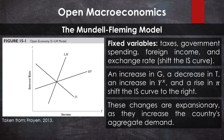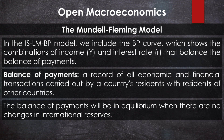In summary, the LM curve gives us the combinations of R and Y that ensure equilibrium in the money market, while the IS curve provides the combinations of R and Y that ensure equilibrium in the goods market. The BP curve gives us the combinations of R and Y that equalize supply and demand in the foreign exchange market at a given exchange rate. The open economy IS-LM-BP model includes a new curve: the balance of payments equilibrium curve, or BP curve. The balance of payments is the record of all economic and financial transactions carried out by residents of a country with residents of other countries. Balance of payments equilibrium occurs when there are no changes in official reserves.